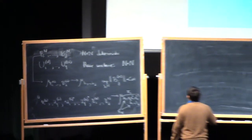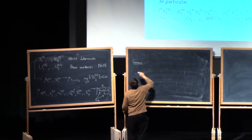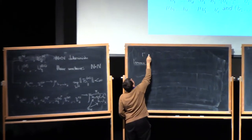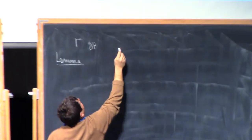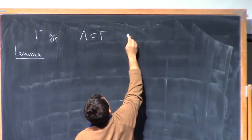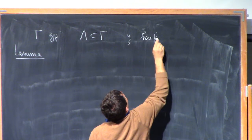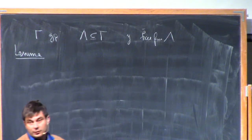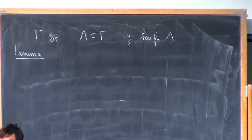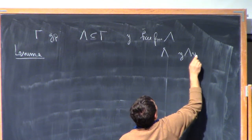So let me give you a little lemma. You probably are very familiar with this. If I take gamma group, and inside of gamma I take lambda, a subgroup, and then I take an element y which is free from lambda. So this is just a group situation. Free simply means that there are no relations between y and the elements of lambda. In that case, it's very easy to check that lambda and y lambda y inverse are free.